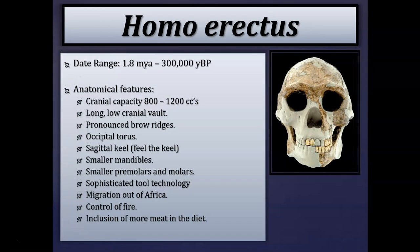Additional anatomical features include a significant jump in cranial capacity compared to Homo habilis. The range for Homo erectus is roughly 800 to 1200 cc's. The cranial vault's frontal region is long and low — receding — so behind the brow ridges the skull goes backward rather than vertical as in modern Homo sapiens.